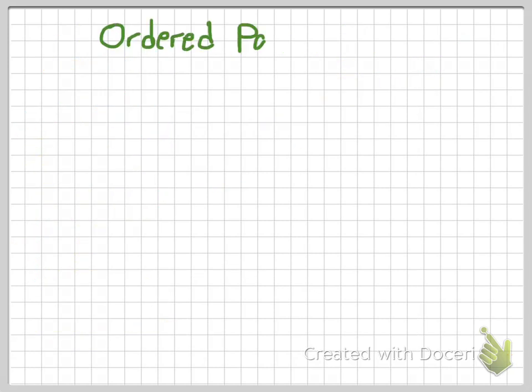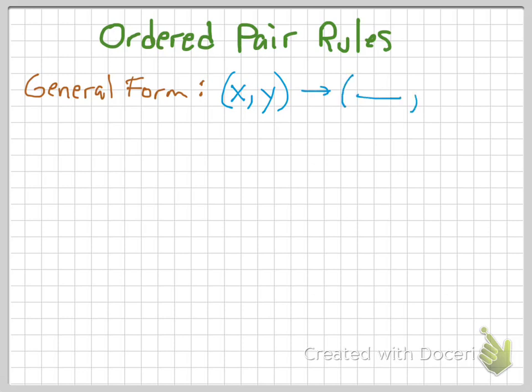Now we also talked about ordered pair rules. These ordered pair rules come in a general form. You ought to remember that too. For the sake of review, in case you missed that class, they come in this form: XY transforming into some new value of X and some new value of Y.